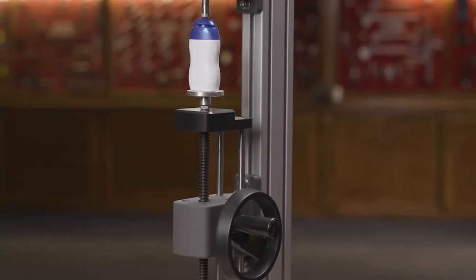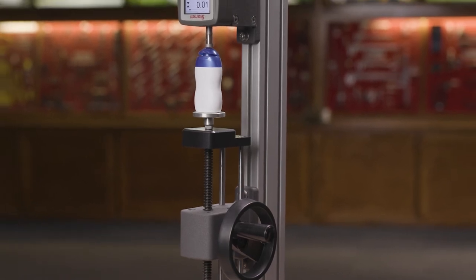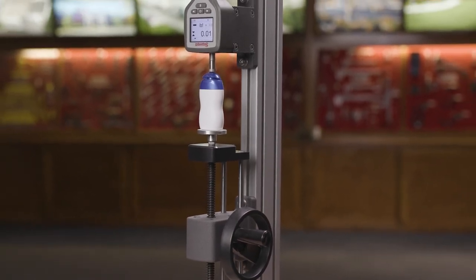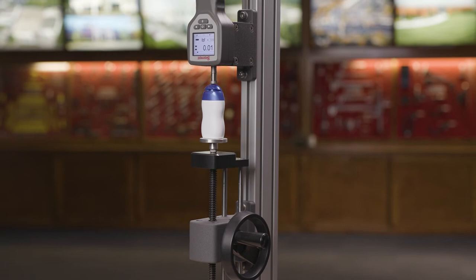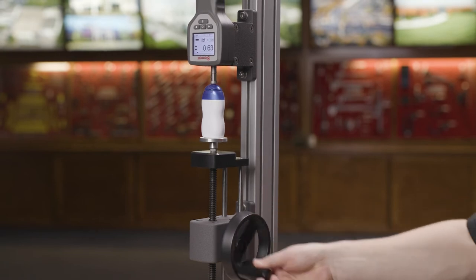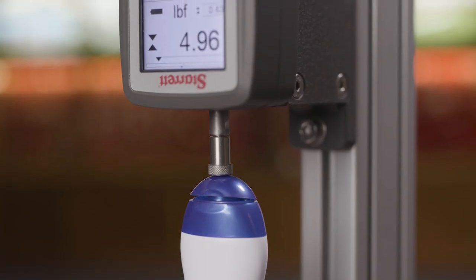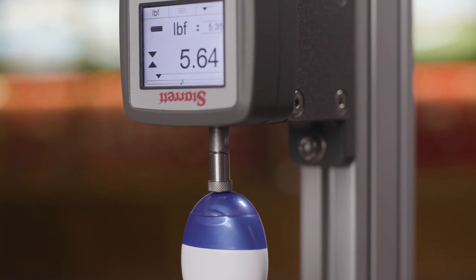The MTH manual tester offers a high resolution worm gear and hand wheel to make tests effortless and precise. One rotation of the hand wheel positions the crosshead .03 inches with a total range of four inches.